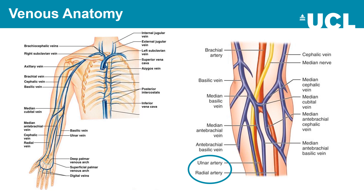Looking at venous anatomy, the major veins from which you may take venipuncture include the median cubital vein, basilic vein, cephalic vein, and brachial vein. Note that the ulnar artery and radial artery run alongside. It's important to feel for a pulse around the area where you're planning to venipuncture to exclude the risk of arterial puncture, which can cause significant bleeding and bruising. Be mindful of the patient's nearby nerves.